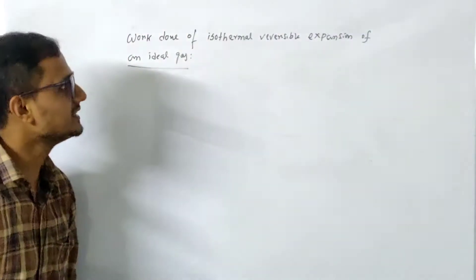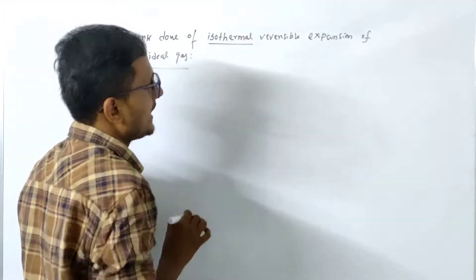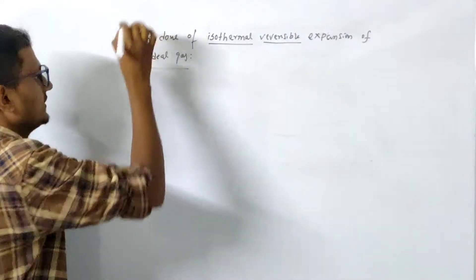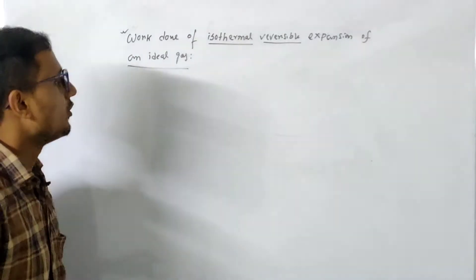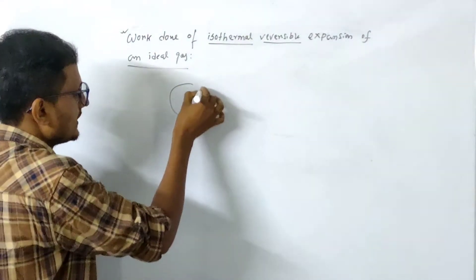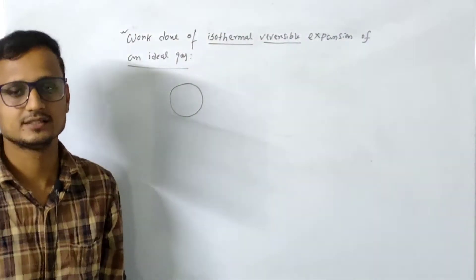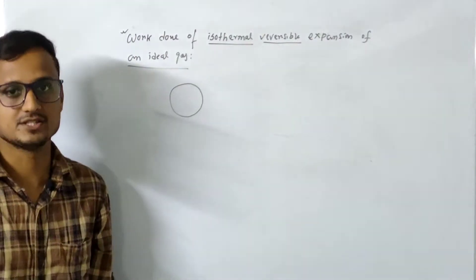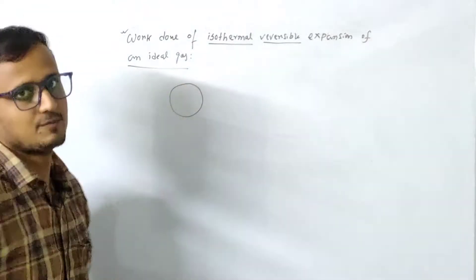Before starting this topic we need to learn what is isothermal process and what is reversible process, and we need to know about the work done, so that you will clearly understand. A system when it changes its state without changing the temperature, that process is called isothermal process.